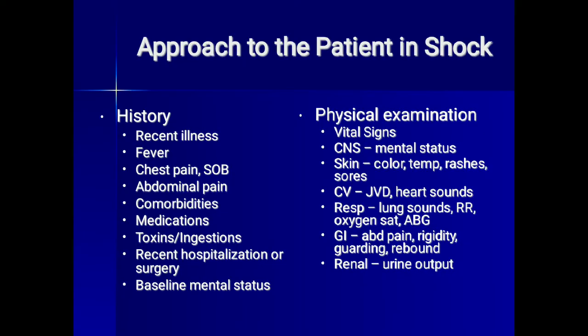Approach to a patient in shock includes history: recent illness, fever, chest pain, shortness of breath, abdominal pain, comorbidities, medications, toxins and ingestions, recent hospitalization or surgery, and baseline mental status. Physical examination should cover vital signs, CNS mental status, skin color, temperature, any rashes or sores, cardiovascular findings including jugular veins and heart sounds, respiratory lung sounds, respiratory rate, oxygen saturation and ABG, GI findings including abdominal pain, guarding, rigidity and rebound tenderness, and renal — mainly urine output. Adequate perfusion requires at least 30 ml urine output per hour.